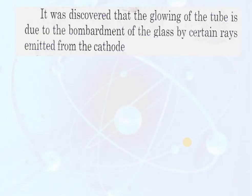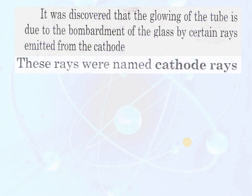It was discovered that the glowing of the tube is due to the bombardment of the glass by certain rays emitted from the cathode. These rays were named by J.J. Thomson as cathode rays.